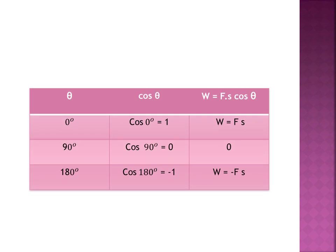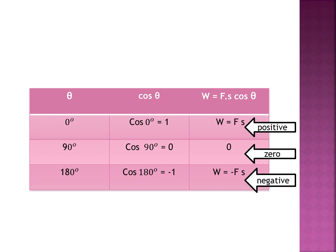In the chart, we can see why they are called positive, negative, and zero work done. When theta = 0°, cos 0° = 1, so W = Fs — it is positive work done. When theta = 90°, cos 90° = 0, so W = 0 — it is zero work done. When theta = 180°, cos 180° = −1, so W = −Fs — it is negative work done.